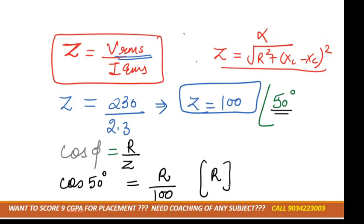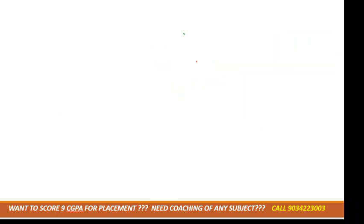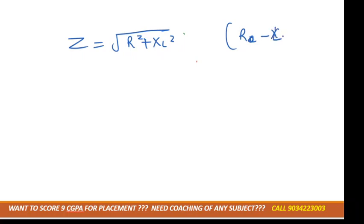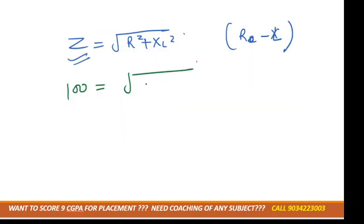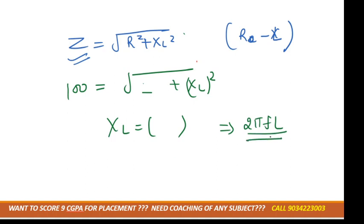We can calculate R from cos(50°) equals R/100. We also have the formula Z equals root of (R² + XL²). We already know Z is 100 and we've calculated R — by substituting, we can get XL. Then using XL equals 2·pi·f·L, we can find L. The XL value comes to approximately 76.6 ohms and R is approximately 64 ohms. This is how we identify the circuit elements.